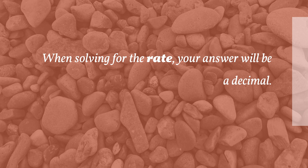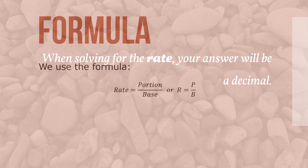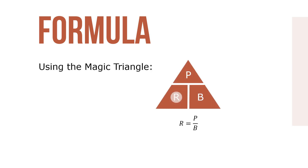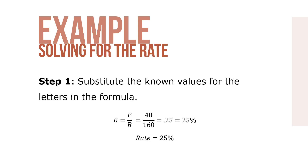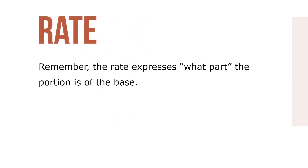When solving for the rate, your answer will be a decimal. Be sure to convert the decimal to a percent by moving the decimal point two places to the right and adding a percent sign. We use the formula R = P ÷ B. Using the magic triangle, rate equals portion over base. Here's an example: What is the rate if the base is 160 and the portion is 40? Substituting into the formula, R = 40 ÷ 160 = 0.25, or 25%. The rate expresses what part the portion is of the base.